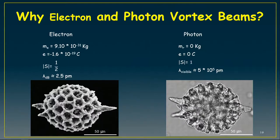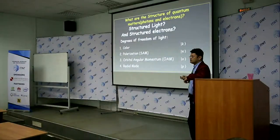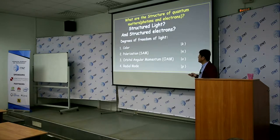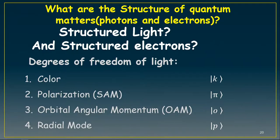For understanding the structure of these important quasi-particles, it's important to know about the degrees of freedom. In the case of light — photons — four degrees of freedom are important. The first one is color or energy. The second one is polarization, which Professor Nikitov yesterday talked about — spin-up and spin-down. The third one we are interested in is the orbital angular momentum of light. And the fourth one is the radial mode, or the intensity — the quality and quantity of the light.